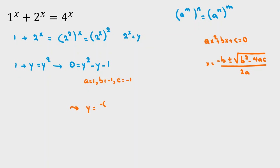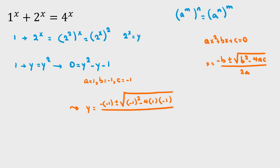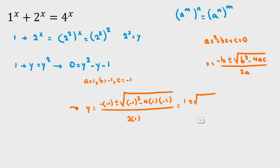So y equals negative b plus or minus square root of b squared minus 4 times a times c, all over 2a — that is 2 times 1 — which gives 1 plus or minus square root of 1 minus 4 times 1. That is 1 plus 4, which is 5, so we get 1 plus or minus root 5, over 2.